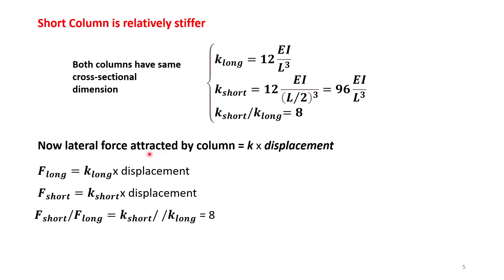Now let us compare the lateral forces attracted by columns during an earthquake. A column attracts lateral force in proportion to its stiffness and the displacement it suffers, i.e., force = k × displacement. Assuming the same displacement in both short and long columns, force in the long column = stiffness of long column × displacement, and force in the short column = stiffness of short column × displacement. Taking the ratio, displacement cancels, and short column force / long column force = short column stiffness / long column stiffness = 8. The lateral force attracted by the short column due to earthquake inertia is also much higher.